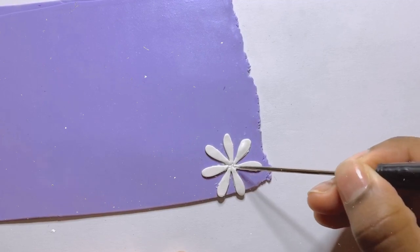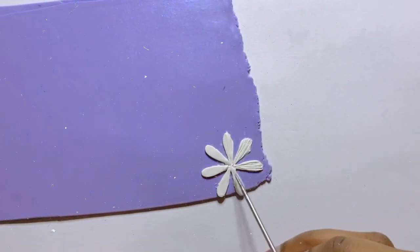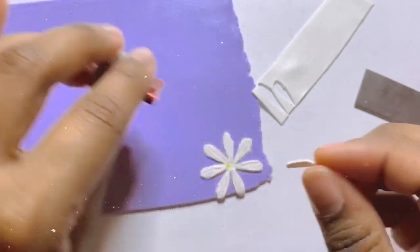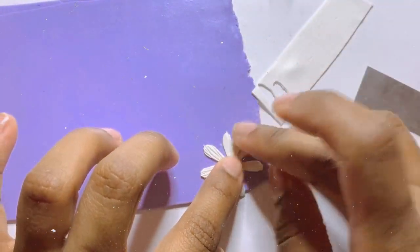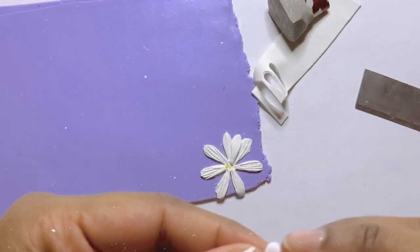Then I used my needle tool to add some texture. I added some long and short strokes. Then I cut out 7 more petals and added them in between the previous petals and also added some texture on them as well.